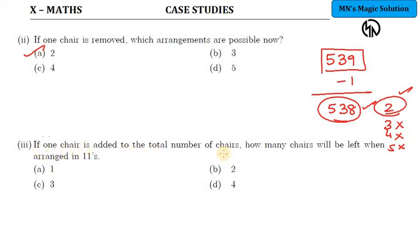Next question: if one chair is added to the total number of chairs - initially it was 539, and I am adding one more chair - I am getting 540. How many chairs will be left when arranged in 11s? So how many will remain? When arranging in 11s, you have to divide by 11 and see.